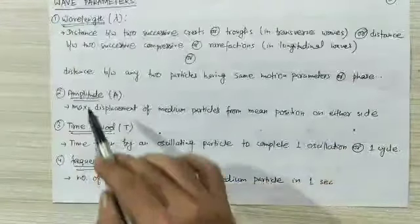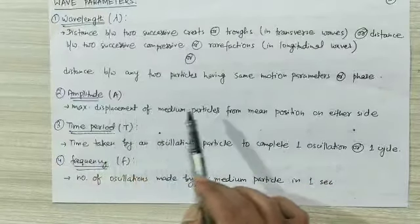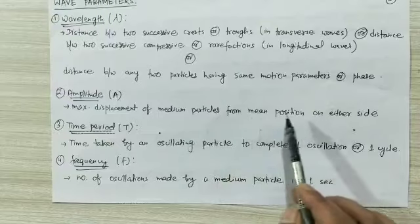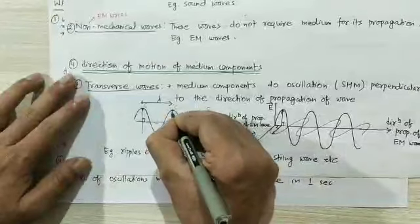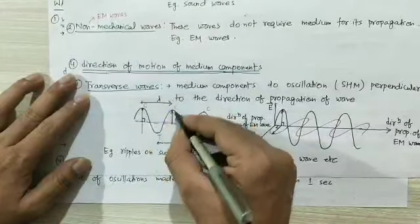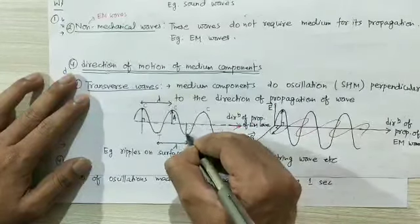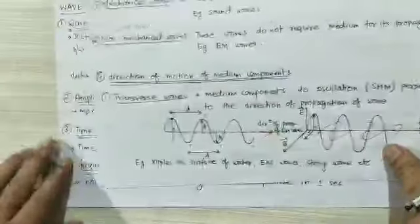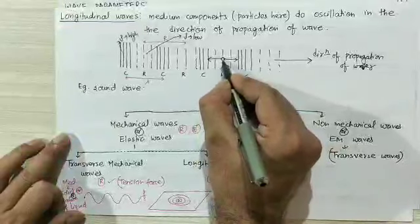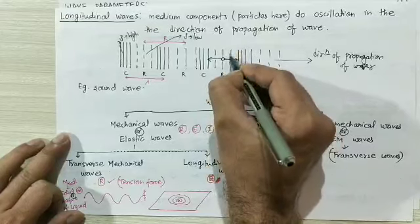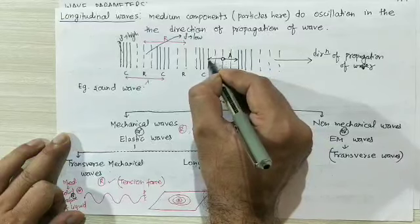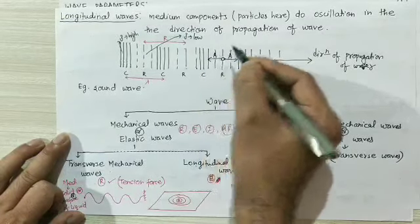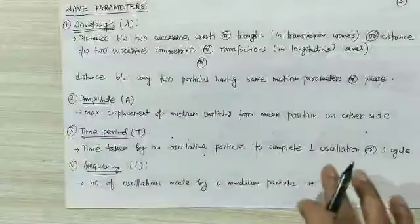The second wave parameter is amplitude — the maximum displacement of medium particles or medium components from the mean position on either side. In a transverse wave, this is the maximum displacement from mean position — that is the amplitude. In a longitudinal wave, a particle can go maximum to a certain location on the right-hand side, or maximum displacement to the left — that is the amplitude.